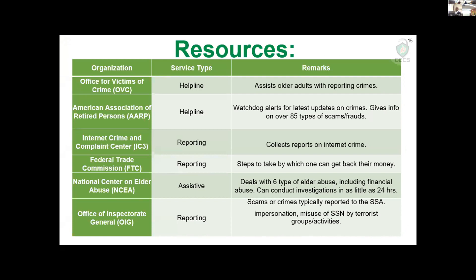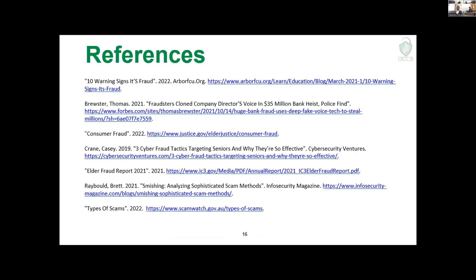Finally, I'd like to point you to some resources to learn more about elder scams. These are primarily targeted at older adults or seniors but can also be used by the broader public. I recommend using a combination of these organizations — they provide different service types including helplines, reporting mechanisms, and assistive services where investigations can be conducted in as little as 24 hours. This may not mean you'll get your money back, but at the very least you can report the people who defrauded you so that authorities can jump on the case to ensure it doesn't happen to others. There are also helpline resources covering about 85 different types of scams and fraud. These are our references and we are open to any questions.